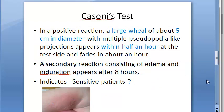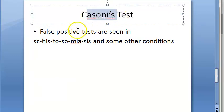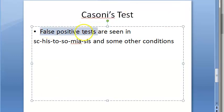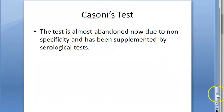Cassoni's test is not used anymore because it gives false positives with schistosomiasis and other conditions. The test is almost abandoned now since it is not specific, and it has been supplemented by better tests like serology.